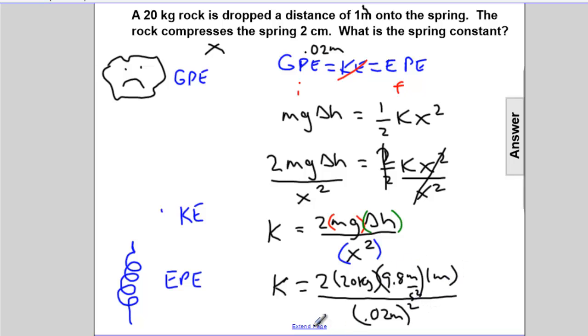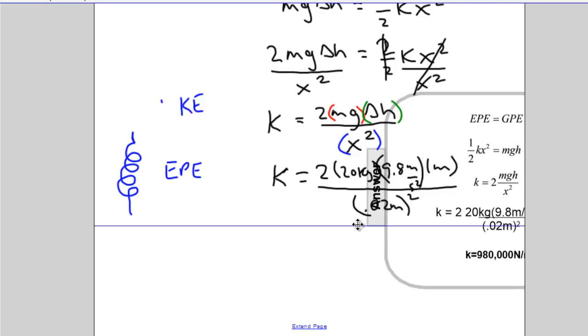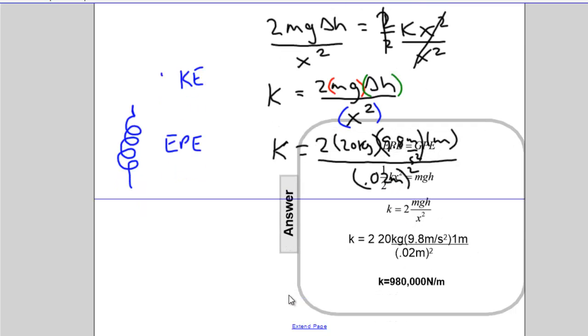We know the units. We looked at the units a moment ago. So we know they're going to work out. But if we do the math, 2 times 20 times 10 times 1 divided by .02 will give us the spring constant. That's extraordinary. It's 980,000, that's incredible, newtons per meter. That means to compress that spring would require 980,000 newtons of force. Wow. That's a lot of force. That's probably why the spring did not compress very far. Tough spring.